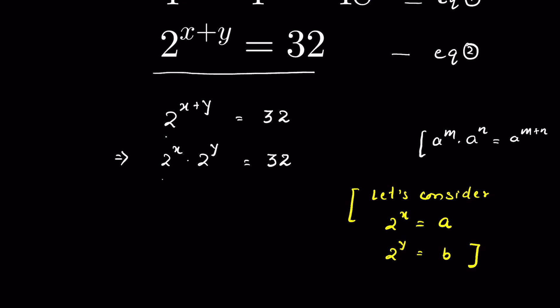In that case, we can write it as a times b equals 32. Let this be equation 4.